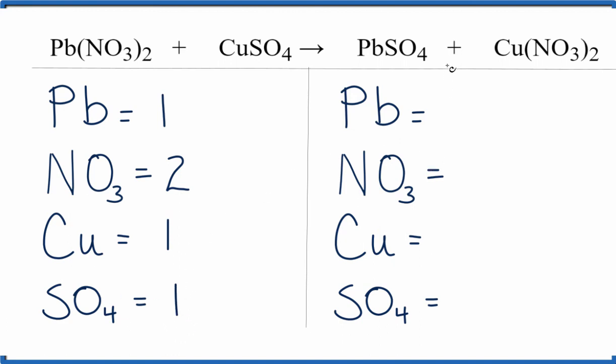Now over on the product side, we have one lead, two times the one nitrate so we have two nitrates, one copper, and then our one sulfate. And that lets us add everything up very quickly. And when we do, we can see that this double displacement reaction is already balanced.